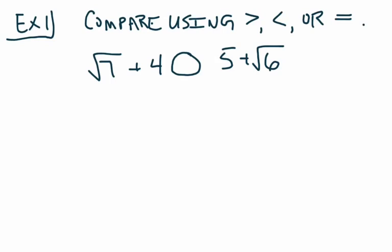So we have the square root of 7 plus 4, and 5 plus the square root of 6. In the circle in the middle, we want to fill that in with greater than, less than, or equal to. I've got a couple of irrational numbers in this problem that I need to estimate a little bit in order to be able to complete this problem accurately.